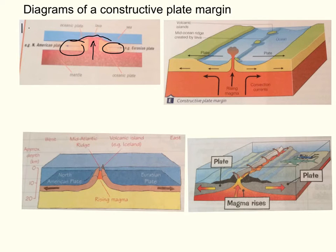Our example is the Eurasian plate and the North American plate moving apart from each other. And that forms a volcano of Iceland, which is found along the mid-Atlantic ridge in the middle of the Atlantic Ocean.